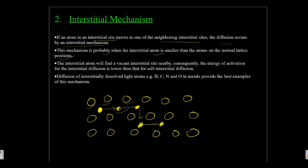The interstitial atom finds a vacant interstitial site nearby. Consequently, the energy of activation for interstitial diffusion is lower than that of self-interstitial diffusion, so it doesn't require much energy and is most likely to occur. Diffusion of interstitially dissolved light atoms like hydrogen, carbon, nitrogen, and oxygen in metals provides the best example of this mechanism, since their size is very small compared to the normal metal atom.